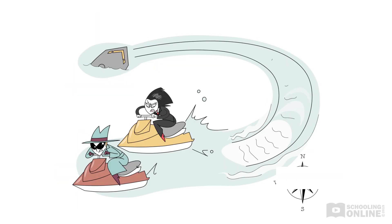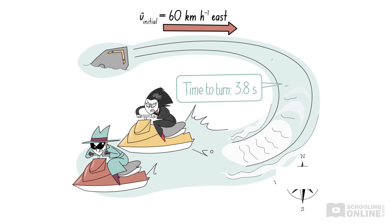The jet skis were travelling due east at 60 kilometres per hour. 3.8 seconds later, after the turn, their velocities were 60 kilometres per hour west.